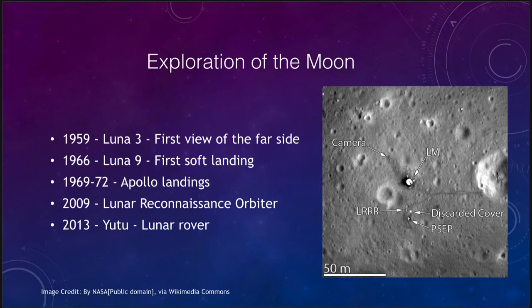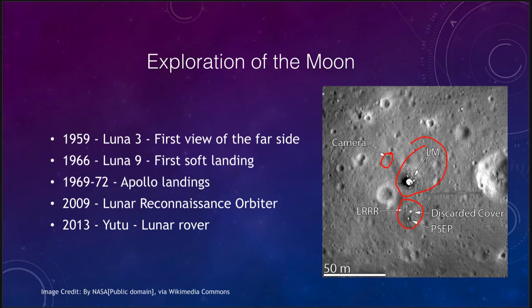The Lunar Reconnaissance Orbiter has been able to resolve details down to just a few meters and has mapped the moon in great detail over about a decade of exploration. This image shows one of the lunar landing sites where you can see the lunar module, discarded materials, various equipment left on the moon, and a camera on the other side — giving us much more detail than we've ever had before.